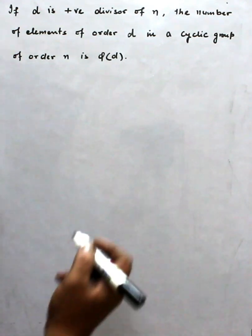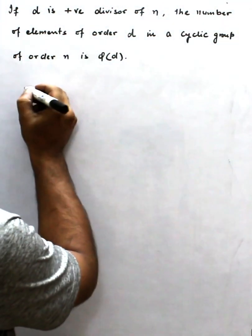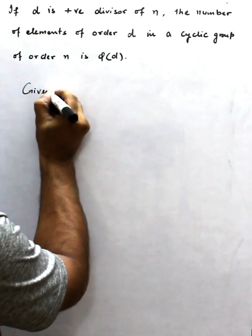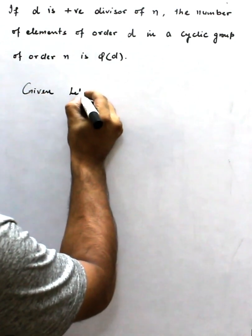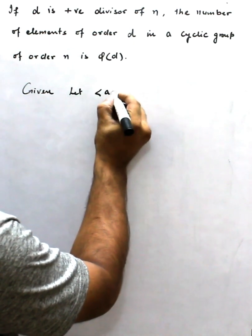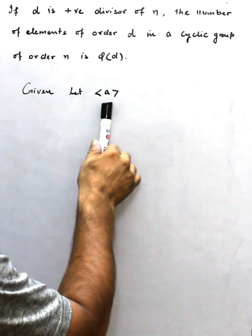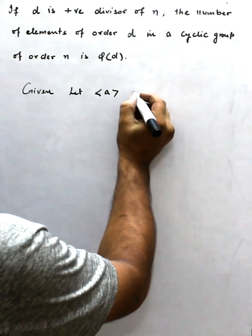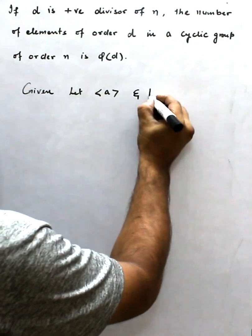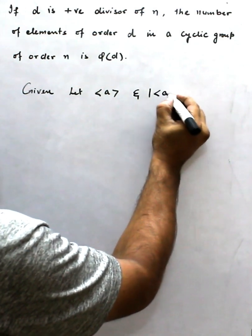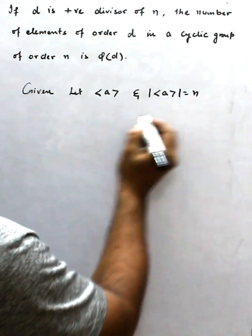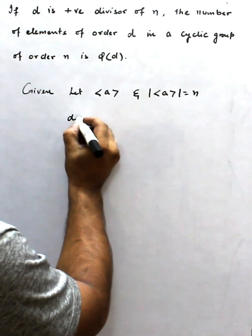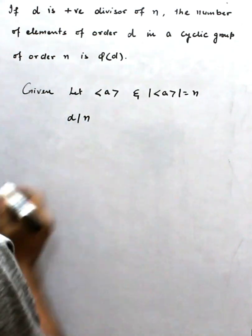First, what is given and what we have to prove. Given that <a> is the cyclic group generated by a, and the order of the cyclic group <a> is equal to n. Also given, d is a divisor of n.